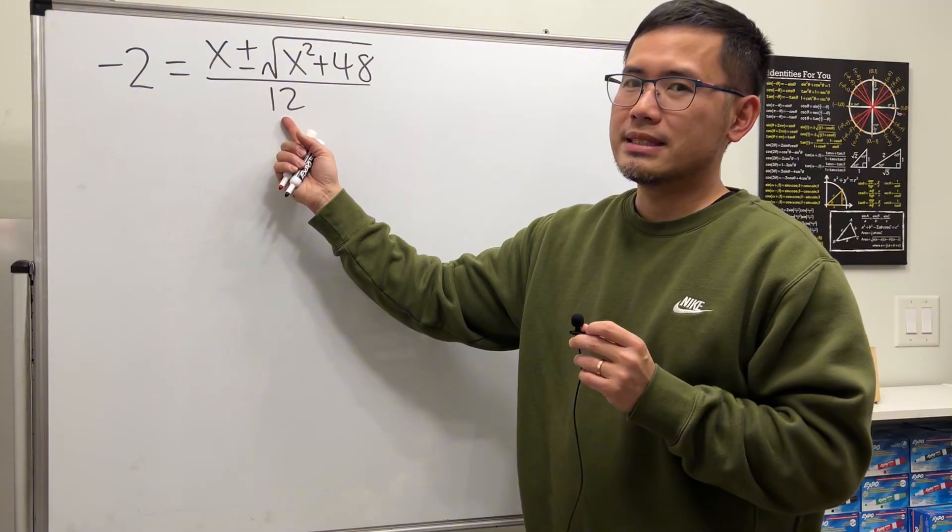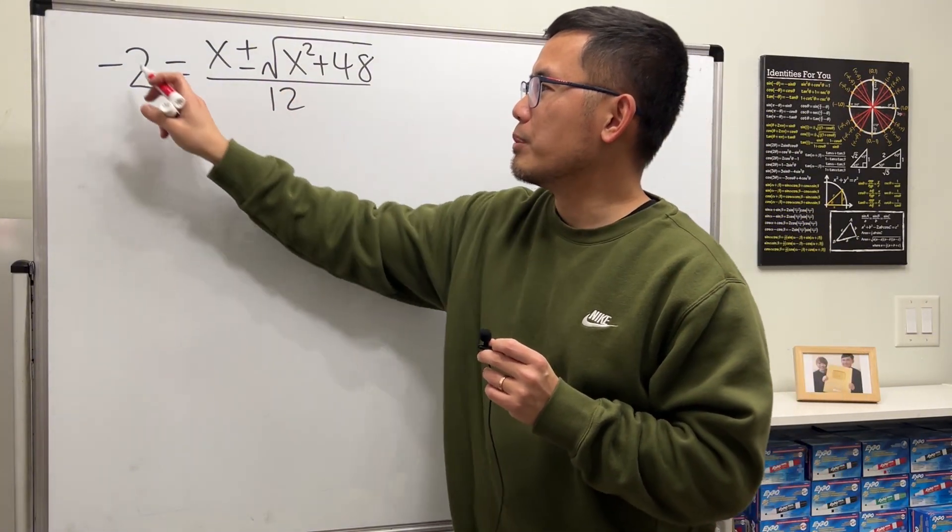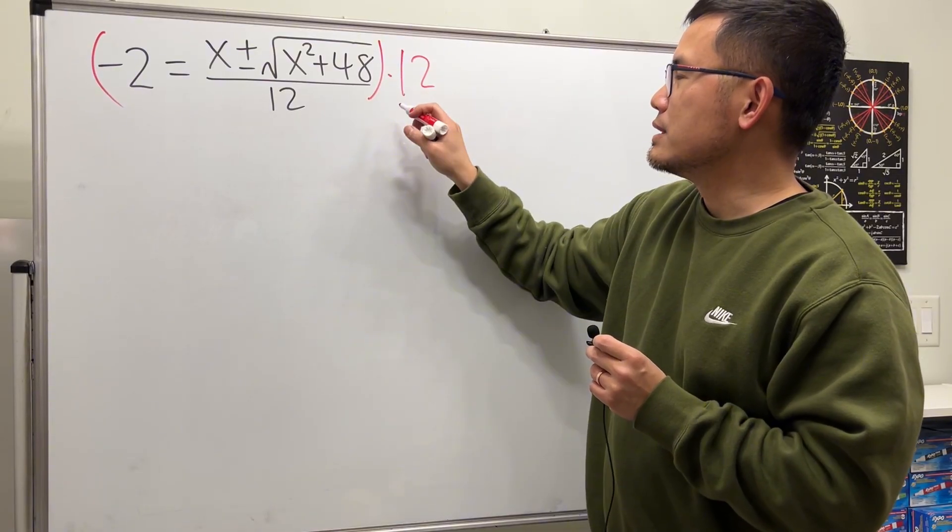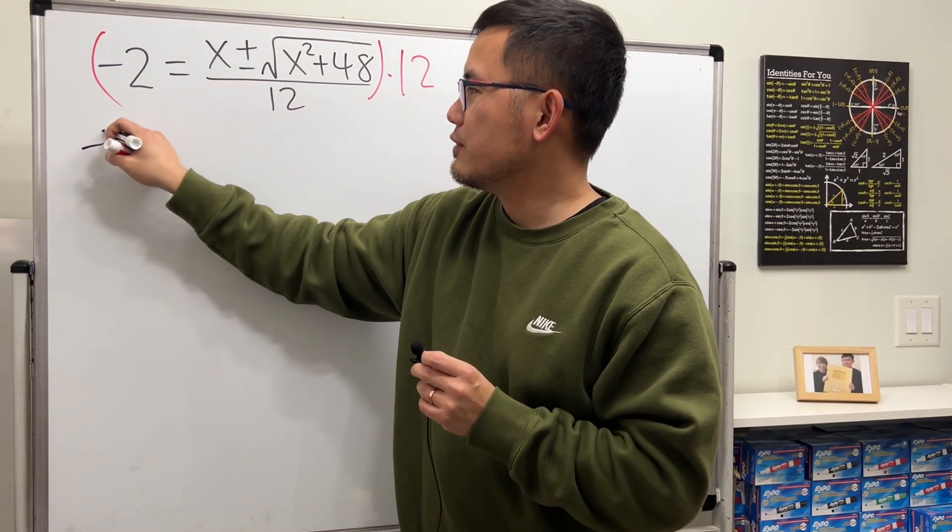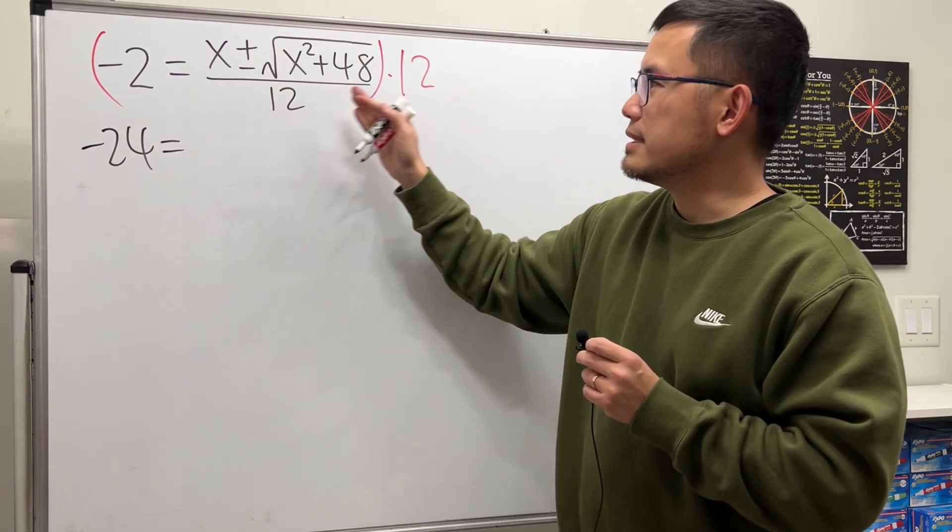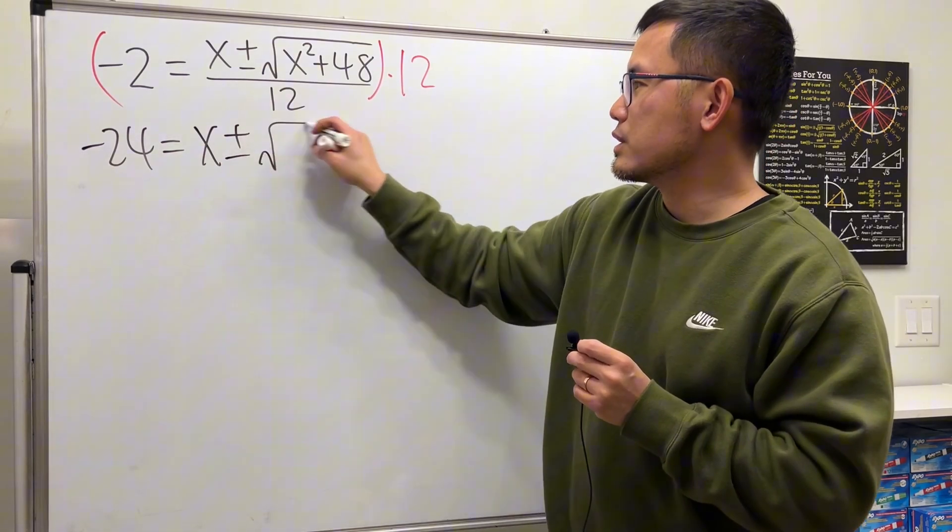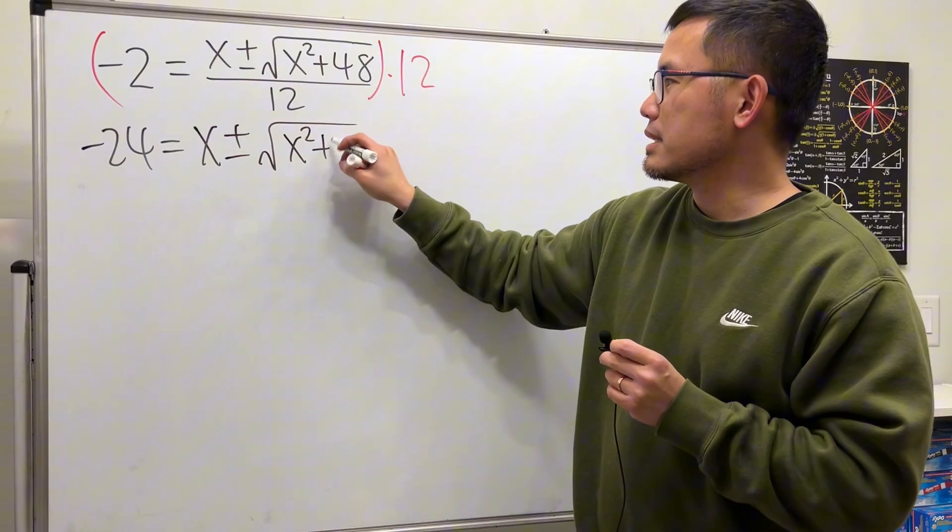Anyway though, firstly, to get x by itself, maybe let's get rid of the fraction, and we can do so by multiplying both sides by 12, so that we see 12 times that is negative 24, and that will be this and that cancel. So we'll just have x plus or minus square root of x squared plus 48.